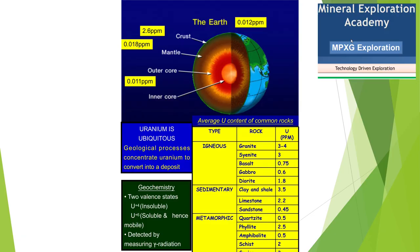If we look at the Earth's crust, uranium occurs in minute concentrations from core, mantle, and crust. What we see on the crust is uranium that has travelled by some geological processes and come to the crust in all types of rocks. We can say that uranium is a ubiquitous mineral found in all rocks, but because of its geochemistry, its secondary enrichment gives us a deposit of uranium.